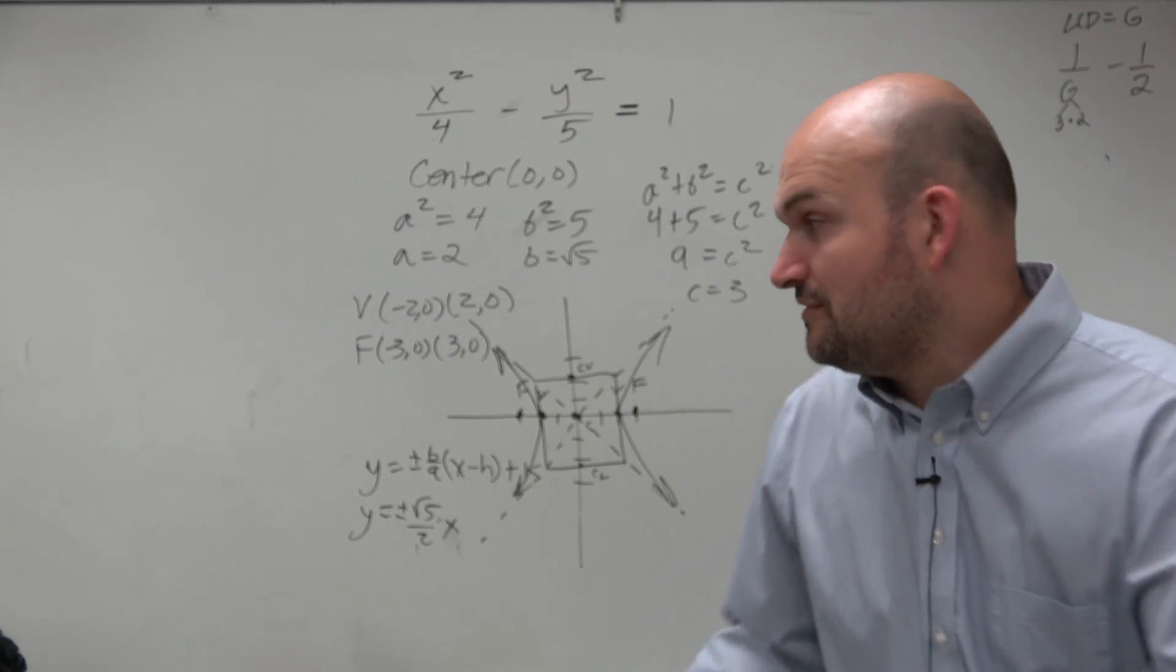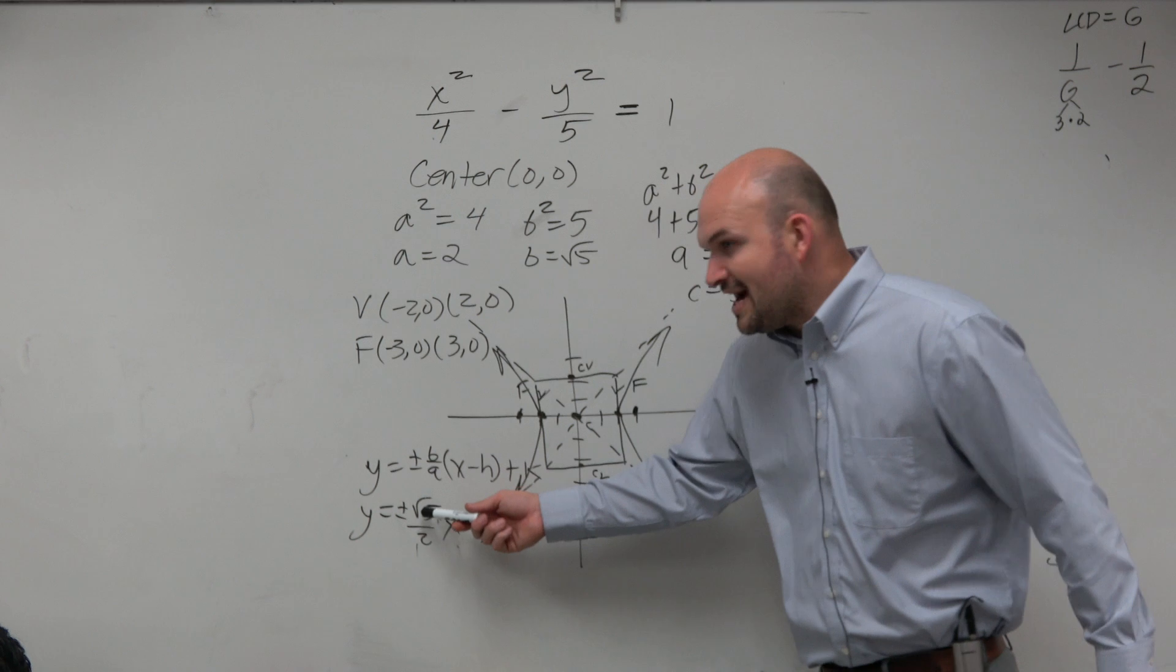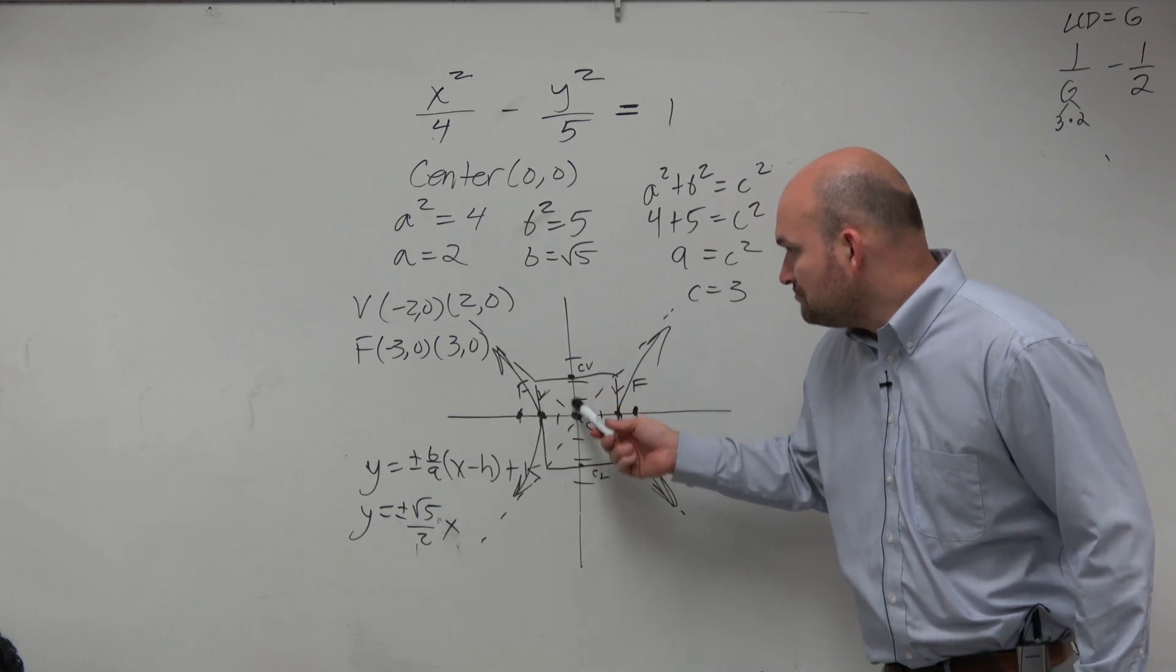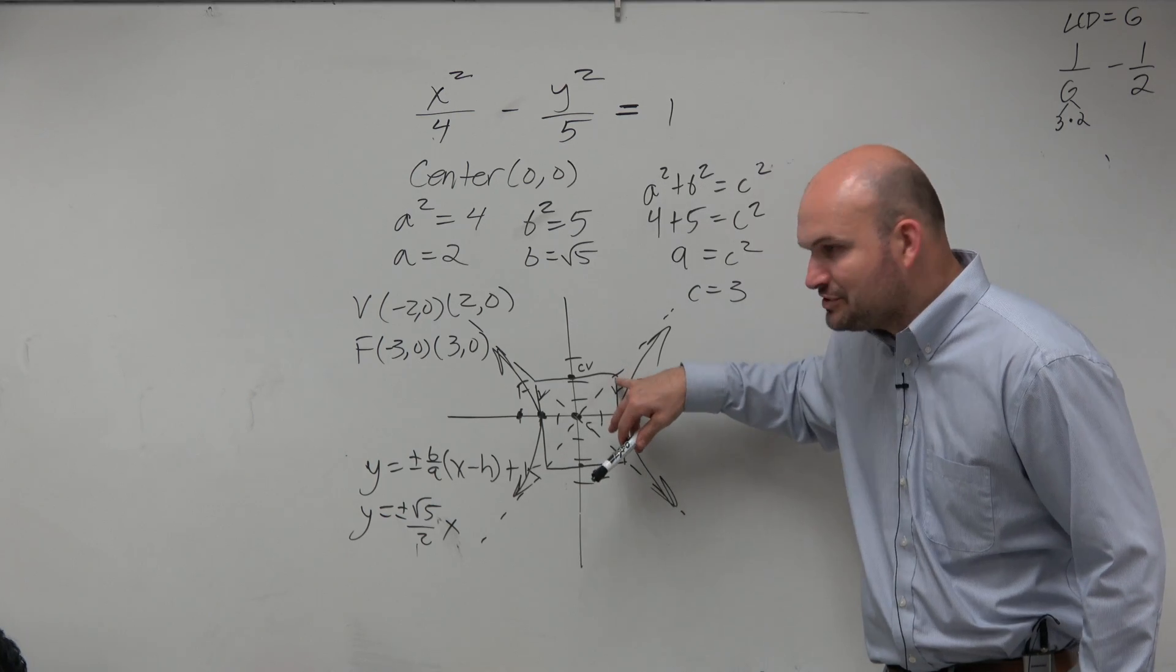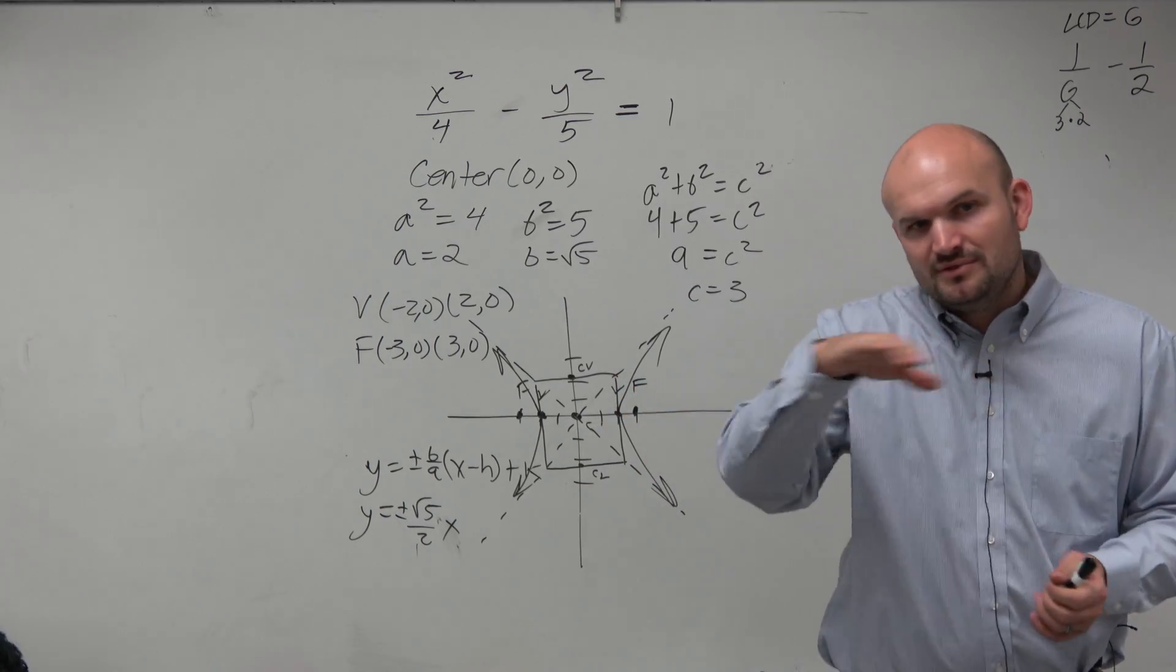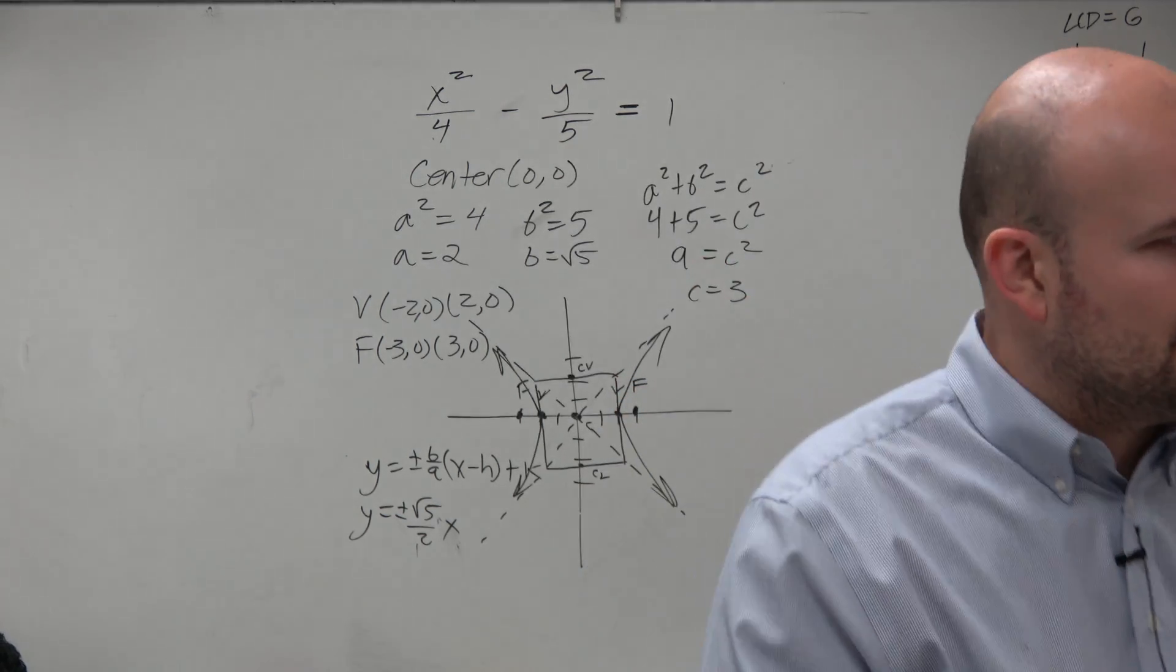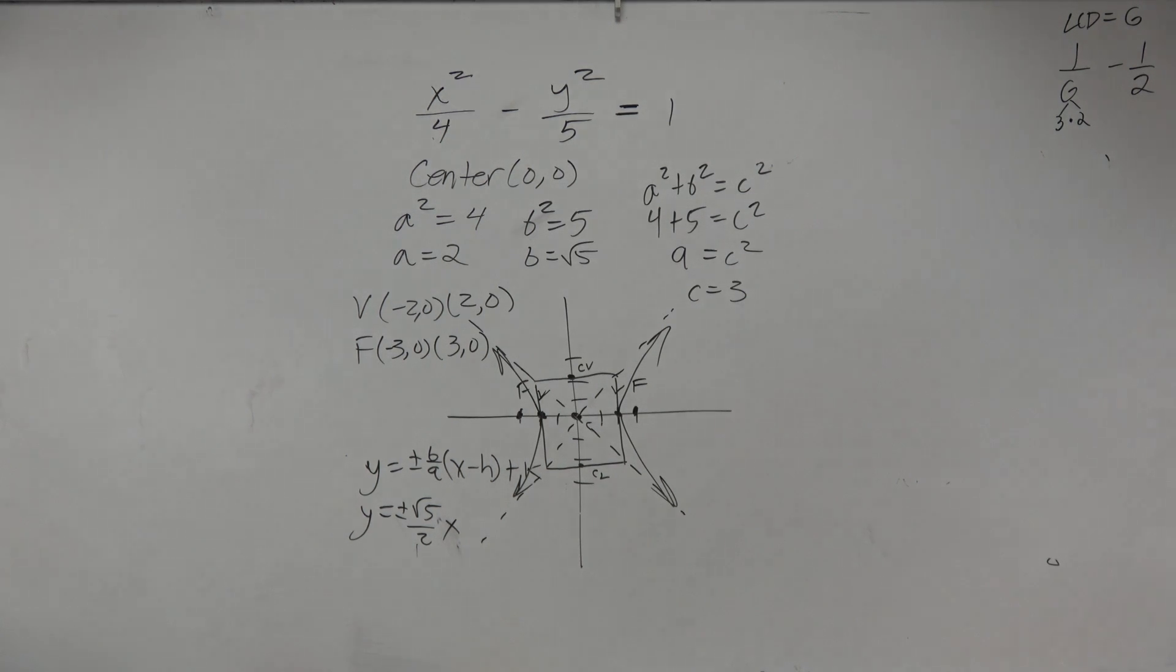But you could still do it, and think about it, actually, if you think about it, if you wanted to do rise over run, square root of 3 is what? 2.3 or something? And then run is 2, over 2. It takes you right to that point, right? So if you just find the vertices and co-vertices, just create a box, it takes you to where those are going to be at, which is a little bit more helpful on the next.